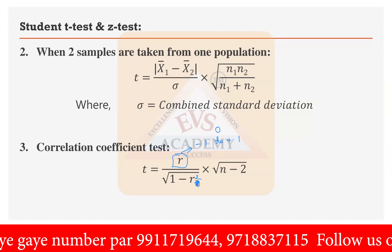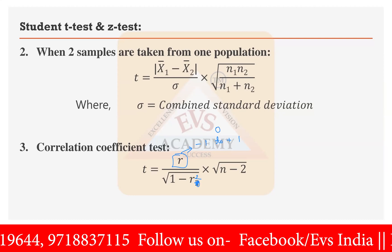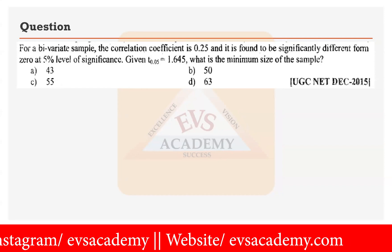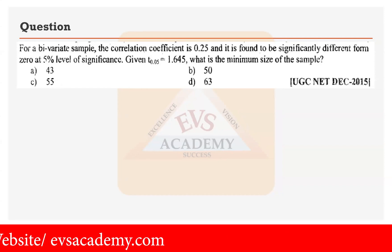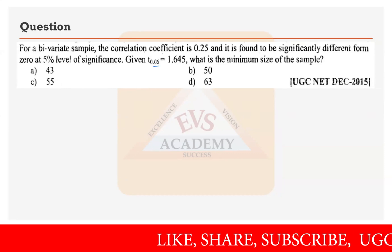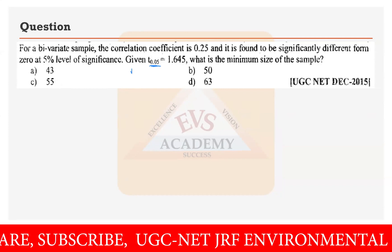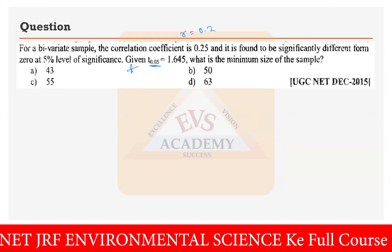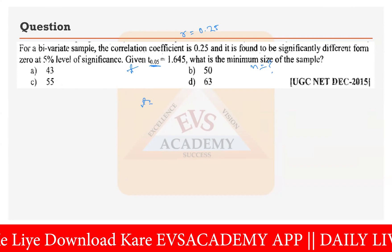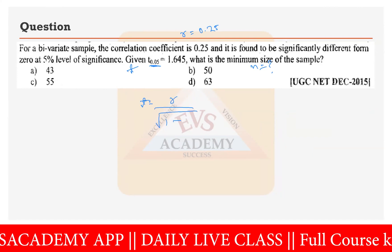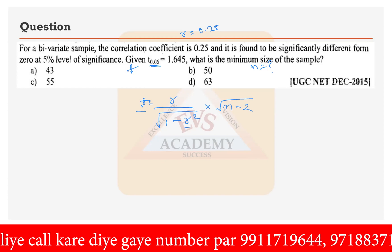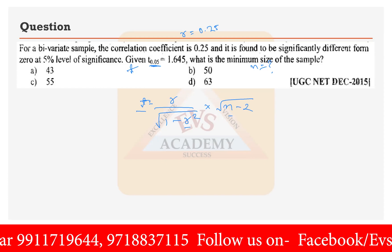Now we will try a question from this application of the t-test for correlation. The question: for a bivariate sample the correlation coefficient is 0.25, and it is found to be significantly different from 0.0 at 5% level of significance. The t table value at 0.05 is given as 1.645. The R value is 0.25, and we need to find the minimum sample size n. All values are present in the formula t = R / √(1 - R²) × √(n - 2).